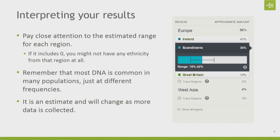When you interpret your results, make sure to click on each of the regions and look at that range. Pay close attention to whether or not the range includes zero, because if the range includes zero, that means our algorithm sometimes found that you didn't have any ethnicity from that region at all. Also remember that DNA is common in a lot of different populations, so telling apart Great Britain from France or Scandinavia is a lot harder because the frequencies are much more similar. Whereas telling apart Great Britain from Native America is a much easier problem. Remember that these are just estimates and they will change as we get more data and better understand population genetics.